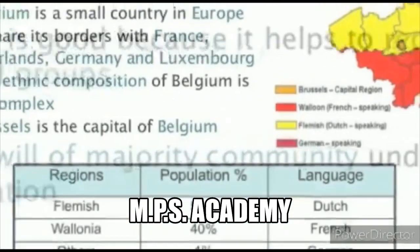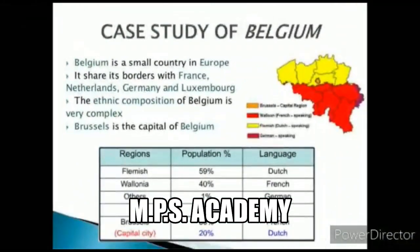Now we will talk about Belgium and Sri Lanka. Belgium is a small country. Its borders are shared with France, Netherlands, Germany, and Luxembourg.